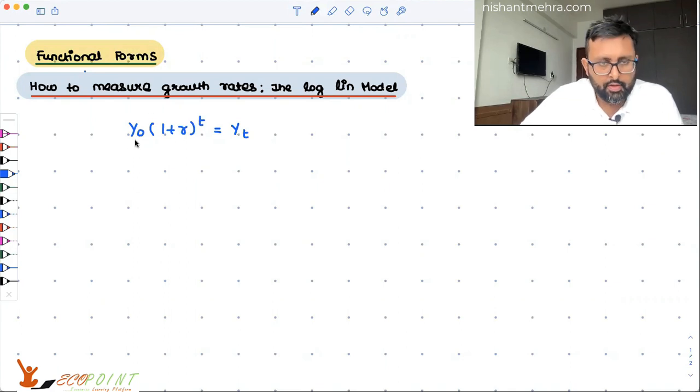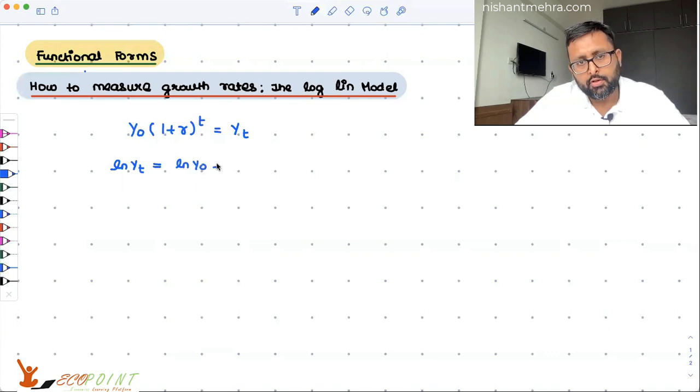So you can take log of both the sides. Log of yt is equal to log of y0 plus t*log(1 plus r). We can write it like this.